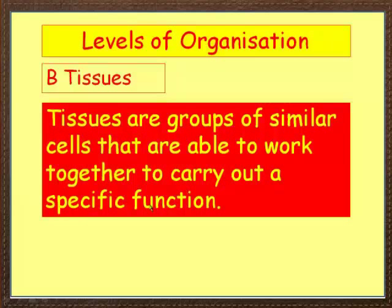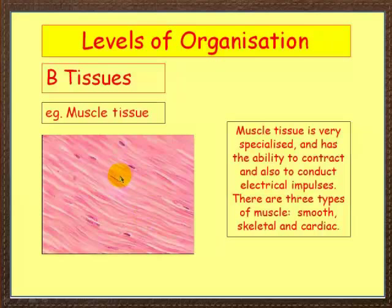Let's look at an example. Here is muscle tissue. Muscle tissue consists of muscle cells, which are very specialized. These cells have the ability to contract and also conduct electrical impulses. There are three types of muscle: smooth, skeletal, and cardiac, which is found around the heart.